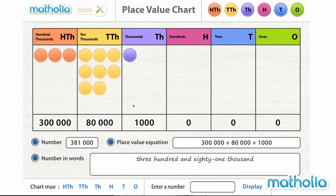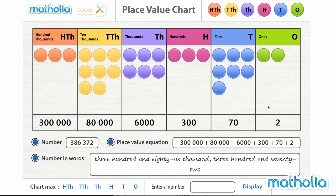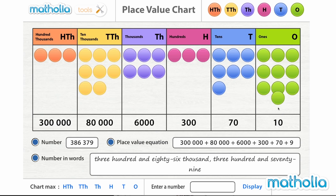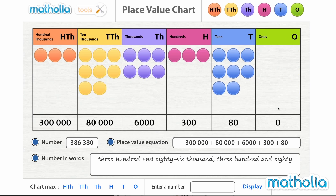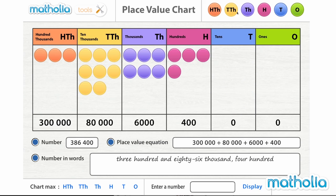Textbooks often use long and complicated diagrams to explain the concept of regrouping. With the Matholia Place Value Chart, students are able to visualize the regrouping process to ensure a deep understanding of the concept.